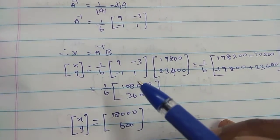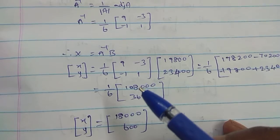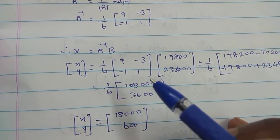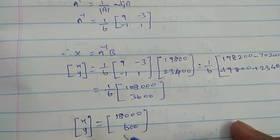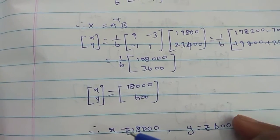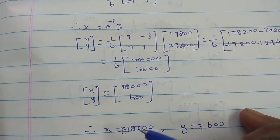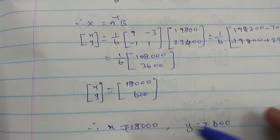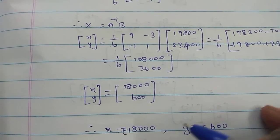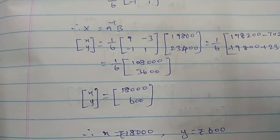Therefore X equal to 18,000, Y equal to 600. Starting salary is 18,000, annual increment is 600.